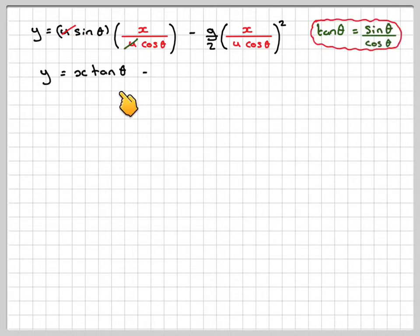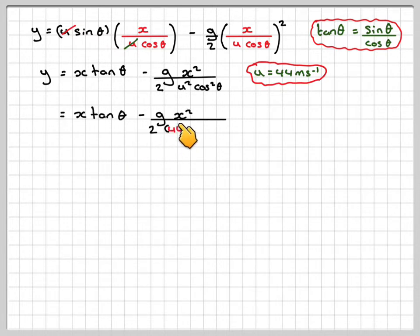So we're going to have x tan theta minus g x squared over 2u squared cos squared theta. But u is 44, that's given in the question. So we'll rewrite that as x tan theta minus g x squared over 2 times 44 squared cos squared theta.